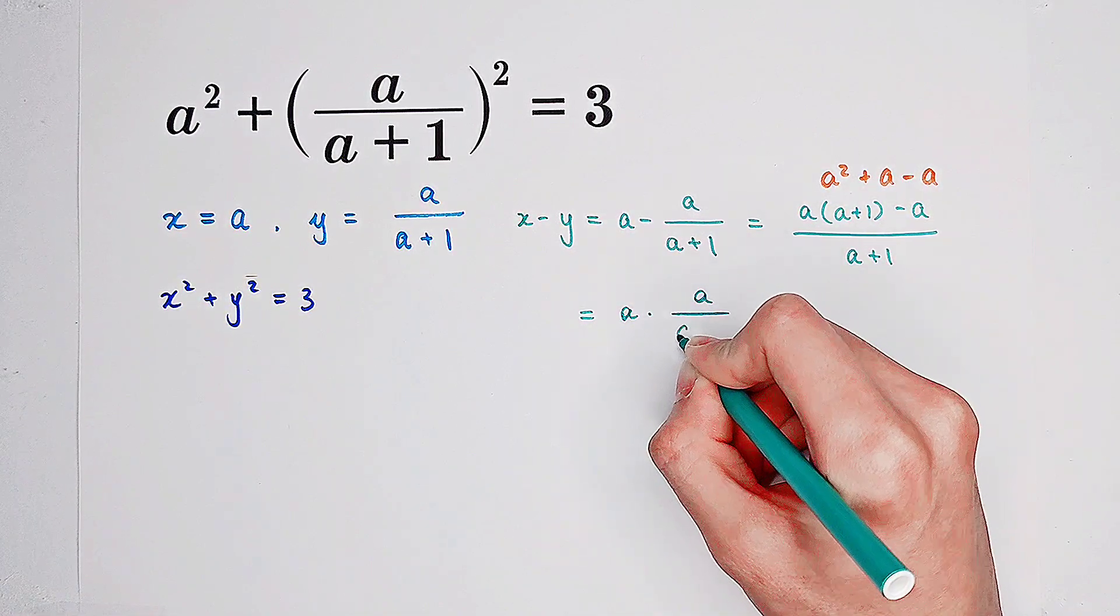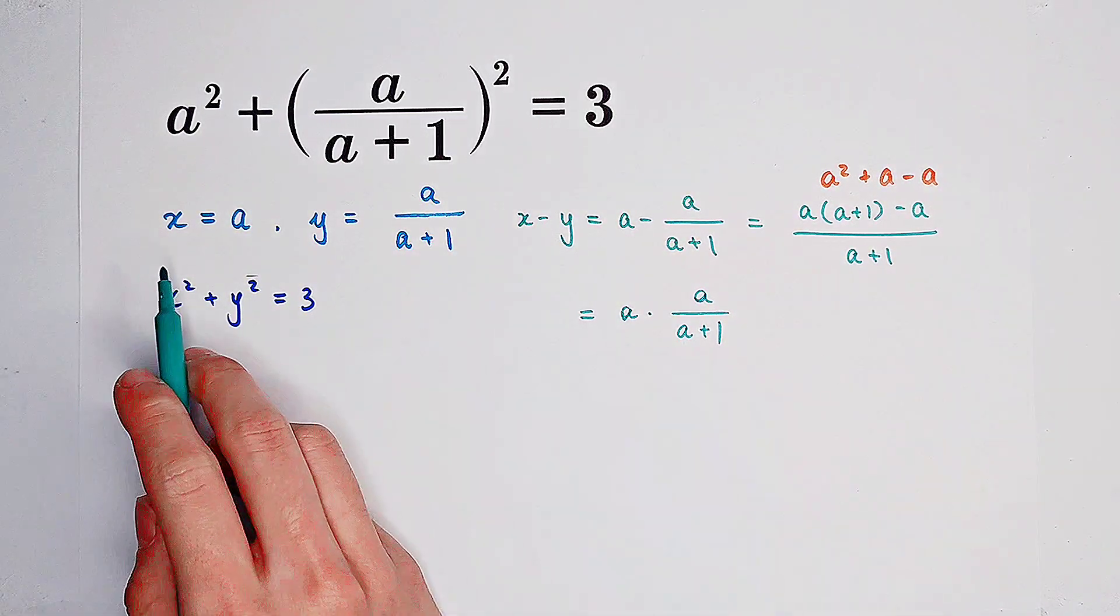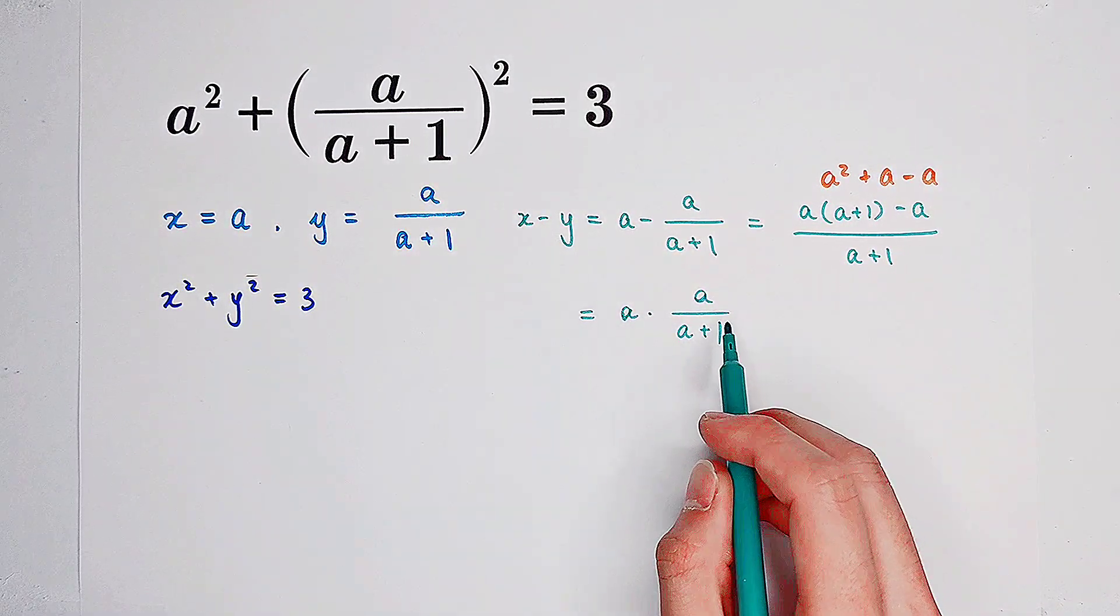So what we get on the numerator is just a times a and we can write it as a times a over a plus 1. Now you can see what is a? a is equal to x and a over a plus 1 is y.